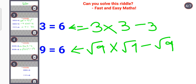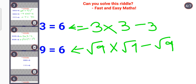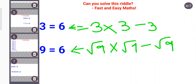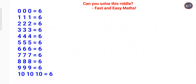Let's quickly see how many we have finished: we have done 2, 3, 4, 5, 6, 7, and 9. So we are just left with triple 0, triple 1, triple 8, and triple 10.